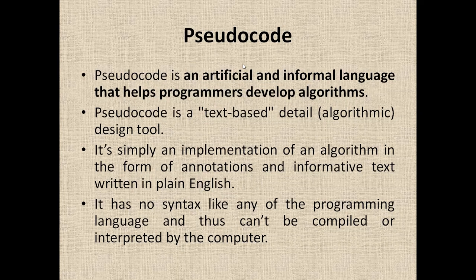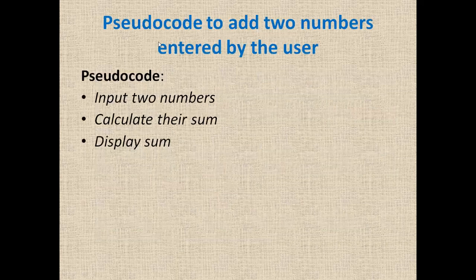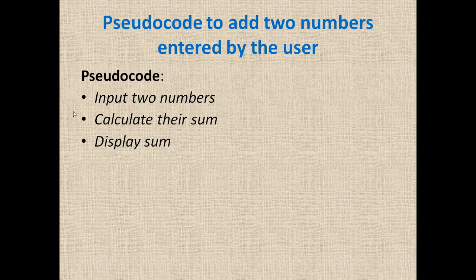We'll study pseudocode by using some examples. Here, one example is taken: the addition of two numbers. If you want to find out the addition of two numbers, first we need to take two inputs from the user. After that, we need to calculate their sum and then display the sum. So the pseudocode for this example contains only these three statements.